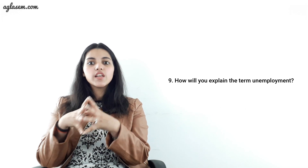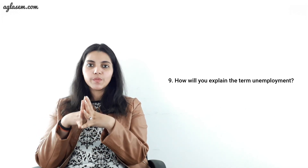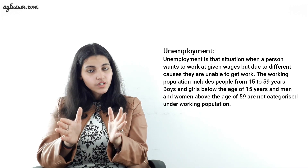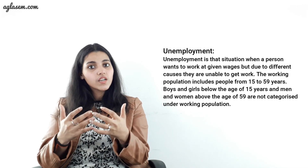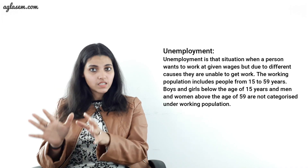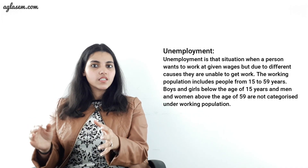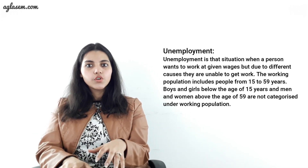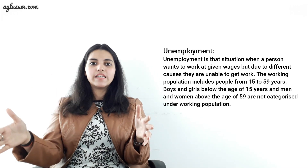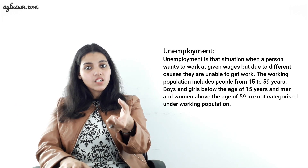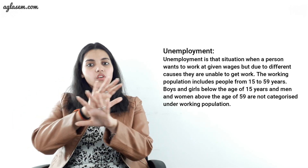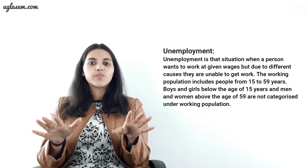Question 9: how will you explain the term unemployment? Unemployment is the situation when a person wants to work at given wages but due to different causes is unable to get work. The working population includes people from 15 to 59 years of age. Boys and girls below 15 and men and women above 59 are not categorized under working population.